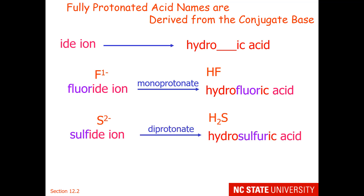Another example is the sulfide ion. We need to diprotonate this to get it to neutral, and its name is hydrosulfuric acid. So if it's an '-ide', it becomes 'hydro-[name]-ic acid', although sometimes annoying things happen like the 'ur' of sulfur returning back.